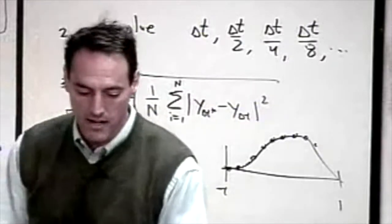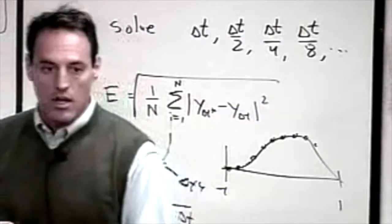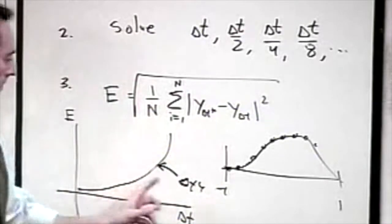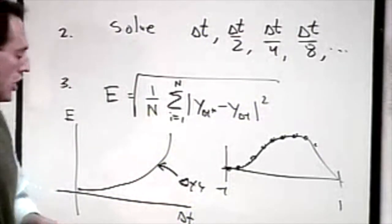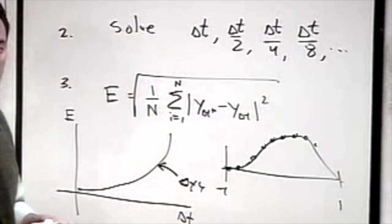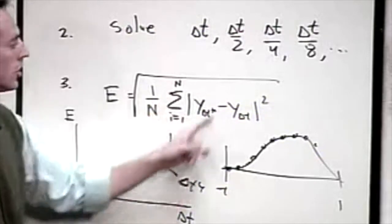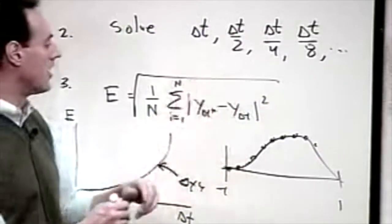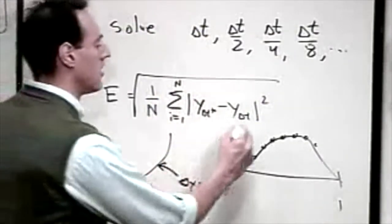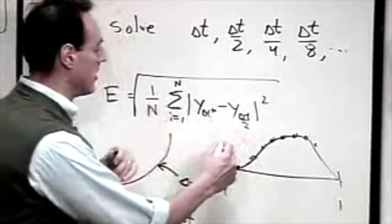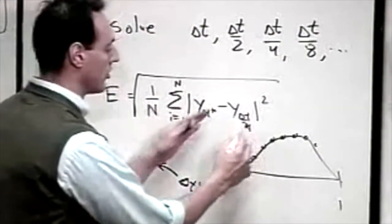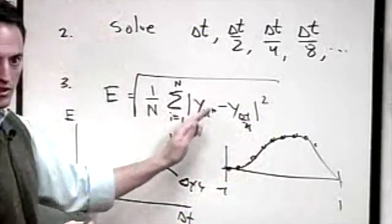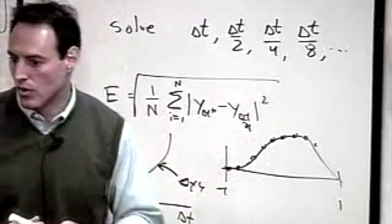A student asks about the error formula — you're computing it for one particular delta T. That's right. First it's delta T, then delta T over two, then delta T over four, and you keep calculating this, and it should look like that decreasing curve. Now let's come to the computer. I'm going to try to program in such a way that this will look good on screen.